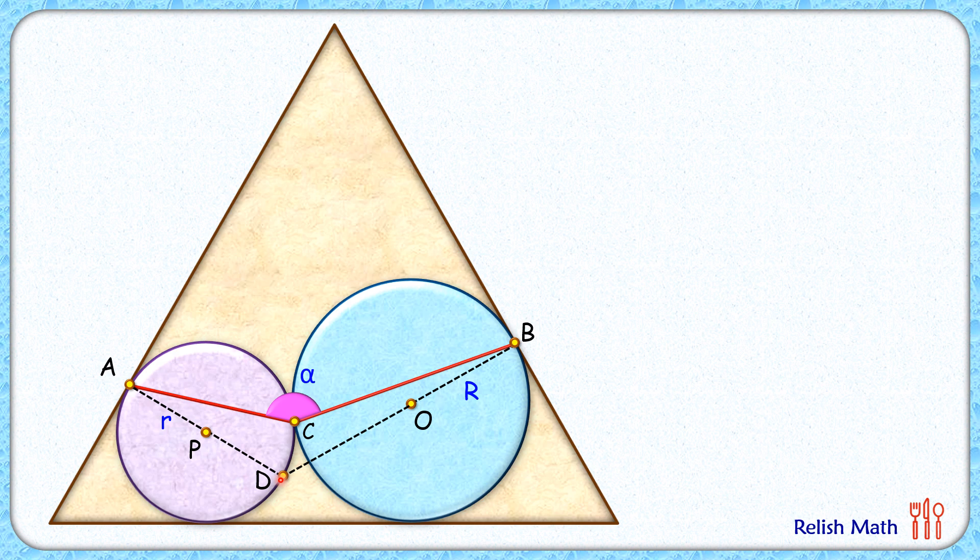Now if we look at this quadrilateral, the green quadrilateral here, this angle is the angle of an equilateral triangle so it's 60 degrees. This angle here is an angle between the radius and tangent so this is 90 degrees, and this angle B also is 90 degrees. For angle D we'll check the angle sum property of a quadrilateral.